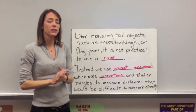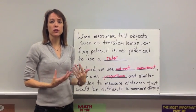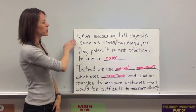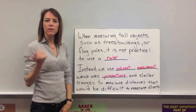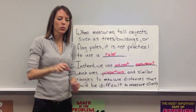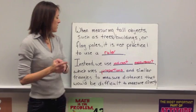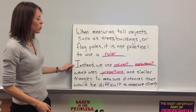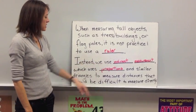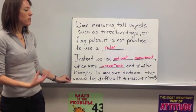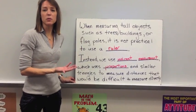Now we're going to talk about something called indirect measurement. Indirect measurement is basically something you use to measure things that are difficult to measure directly. The best example is measuring tall objects such as a tree, a building, or a flagpole where it's not practical to use a ruler. You're not going to climb a tree with a ruler — you're going to use indirect measurement, which uses proportions and similar triangles to measure distances that would be difficult to measure directly.